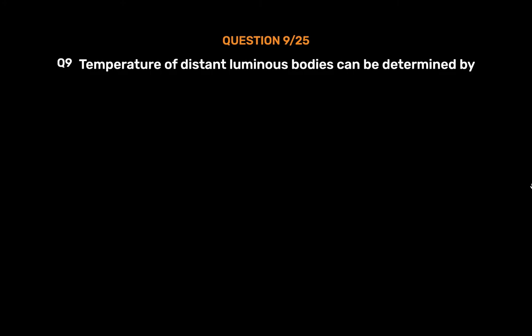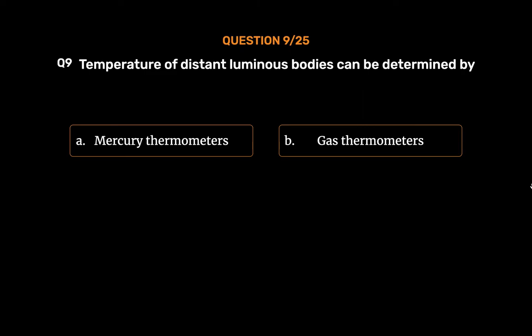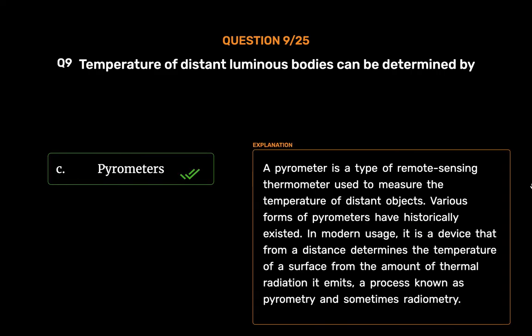Question No. 9. Temperature of distant luminous bodies can be determined by. Option A: Mercury Thermometers. Option B: Gas Thermometers. Option C: Pyrometers. Option D: Color Thermometers. The correct answer is Option C: Pyrometers. A pyrometer is a type of remote sensing thermometer used to measure the temperature of distant objects. In modern usage, it is a device that from a distance determines the temperature of a surface from the amount of thermal radiation it emits — a process known as pyrometry and sometimes radiometry.